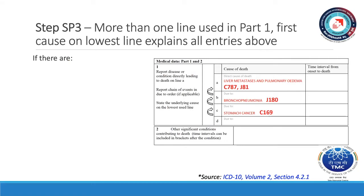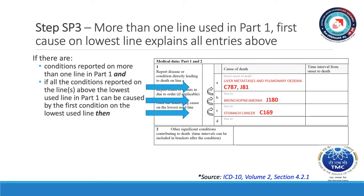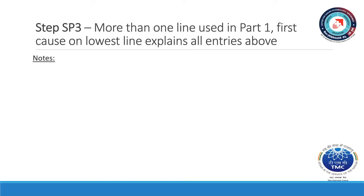Now let's look at step SP3: more than one line used in Part 1 — first cause on lowest line explains all entries above. If there are conditions reported on more than one line in Part 1 and all the conditions reported on the lines above the lowest used line can be caused by the first condition on the lowest used line, then select the condition on the lowest line as the tentative starting point. Next, go to step SP6. Take a look at the example on the screen, which has more than one line used in Part 1 and the first cause on the lowest line — stomach cancer — explains all entries above: bronchopneumonia, liver metastasis, and pulmonary edema.